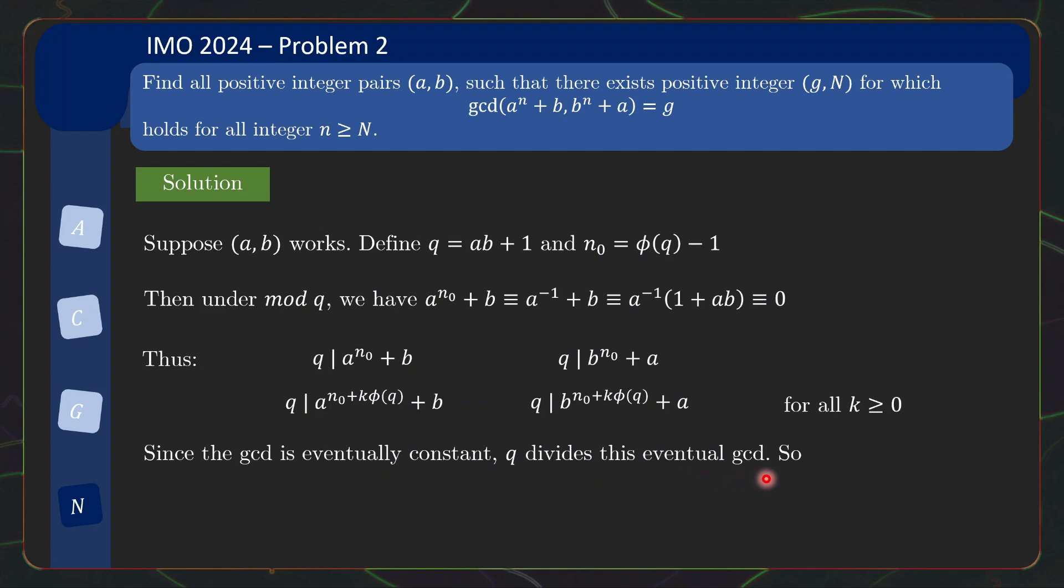This means that if you reach the point where gcd is eventually constant, namely from this capital N onwards, q must divide this, q must divide this, but q must also divide the next power. So q also divides this, and q divides this.